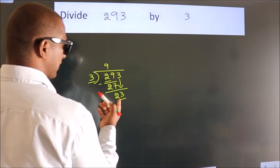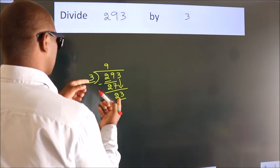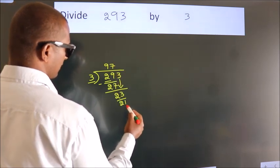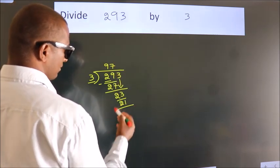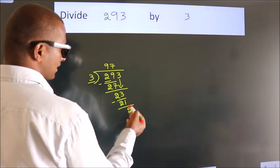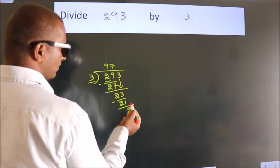A number close to 23 in 3 table is 3 sevens, 21. Now we subtract. We get 2. After this, no more numbers to bring it down.